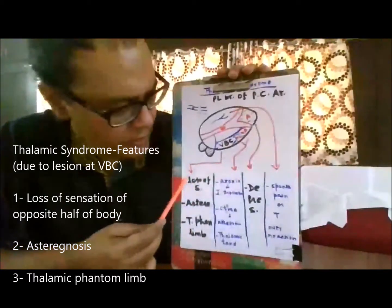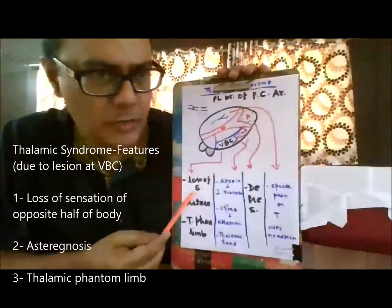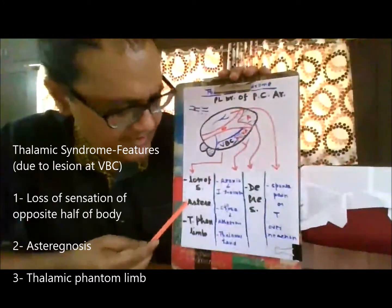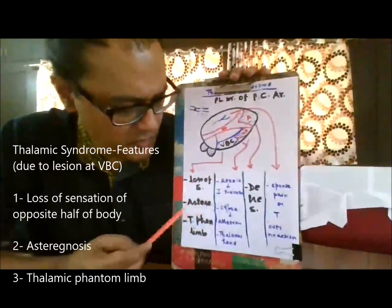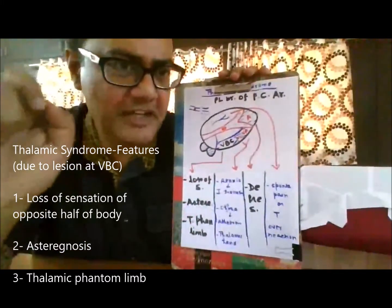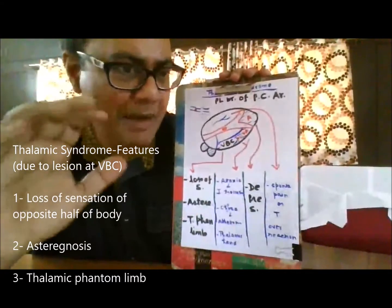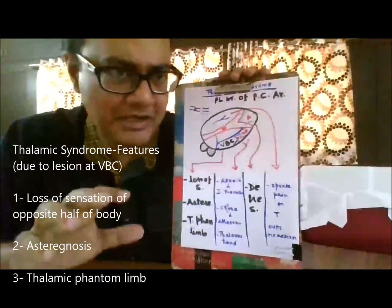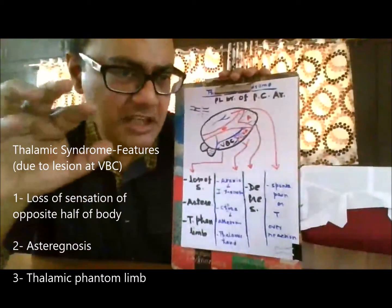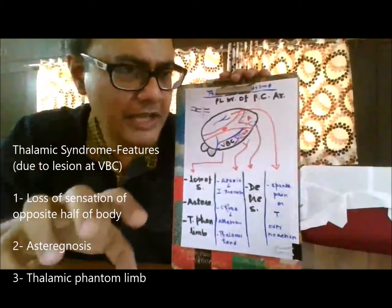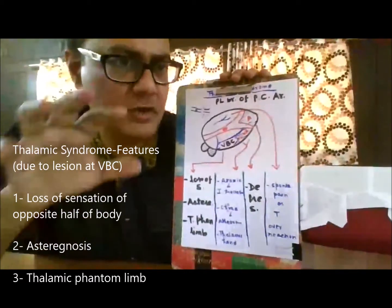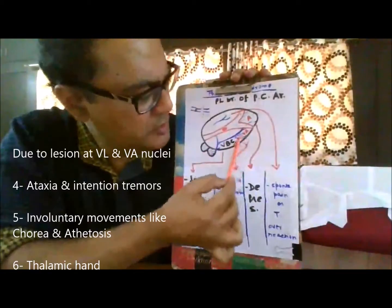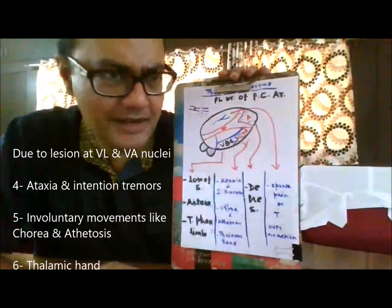The clinical features include loss of all somatic sensation of the opposite half of the body. As fine sensations are also lost, there will be astereognosis — inability to recognize familiar objects with closed eyes by touching. There will also be thalamic phantom limb, that is, inability to find the lower limb or other body parts with closed eyes, because position sense is also lost due to the affected ventral lateral and ventral anterior motor nuclei.